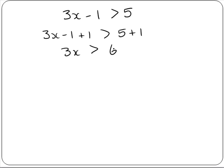Then we divide both sides by 3 to get x by itself. So 3x divided by 3 and 6 divided by 3. 3 into 3 goes once. 3 into 3x goes x times. 3 into 3 goes once. 3 into 6 goes twice. So this leaves us with x is greater than 2.